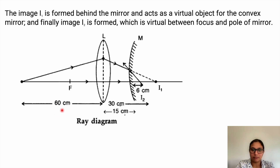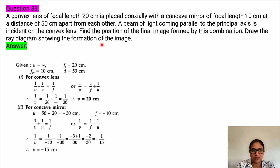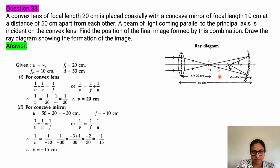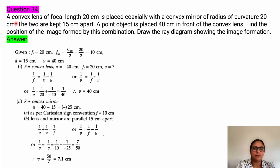Next question: a convex lens of focal length 20 centimeters is placed coaxially with a concave mirror of focal length 10 centimeters, 50 centimeters apart. A beam of light parallel to the principal axis is incident on the convex lens. Find the position of the final image formed by this combination. For the convex lens, calculate the image distance; for the concave mirror, calculate the image distance. The image distance is minus 15 centimeters, so the image is formed on the left side of the concave mirror — it is a real image lying between f and C of the concave mirror.